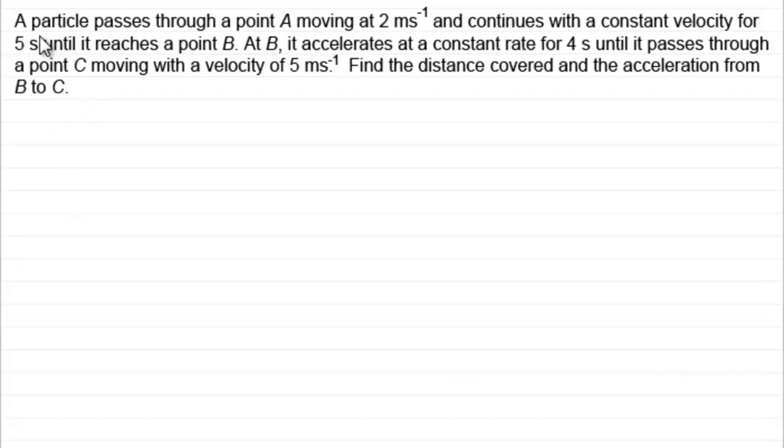With this question we've got a particle passing through point A moving at 2 meters per second and continues with constant velocity for 5 seconds until it reaches point B. At B it accelerates at a constant rate for 4 seconds until it passes through point C, moving with a velocity of 5 meters per second. What we've got to do is find the distance covered and the acceleration from B to C.